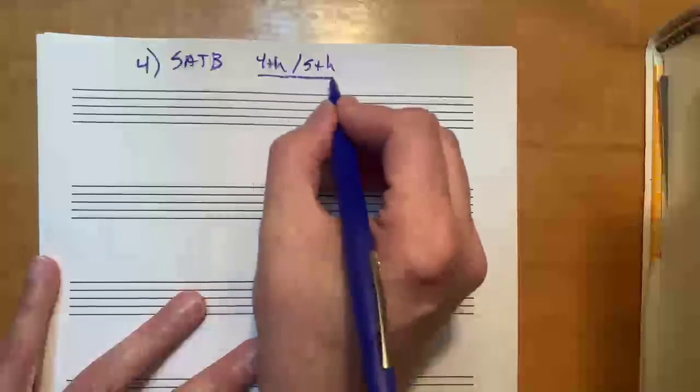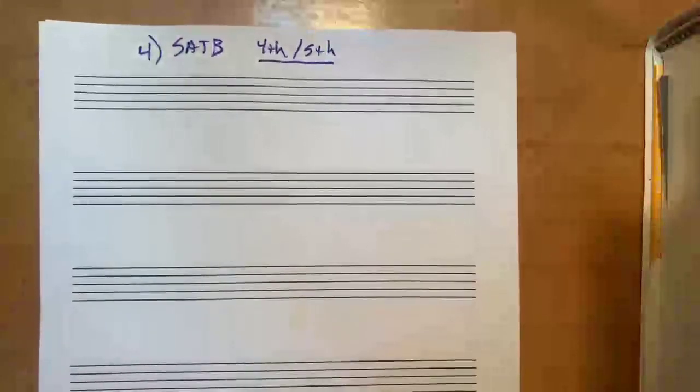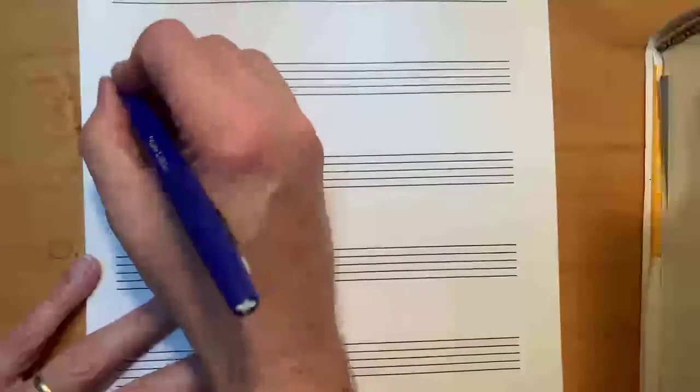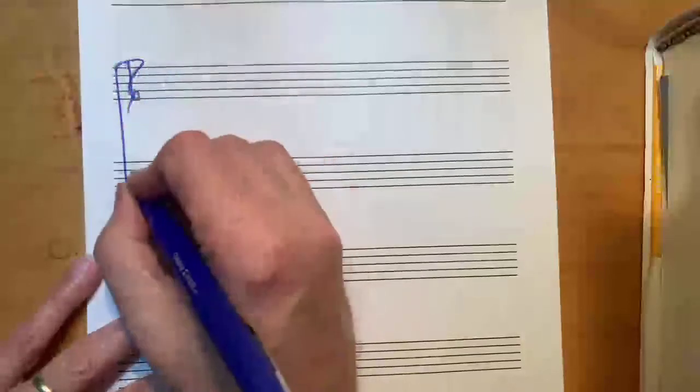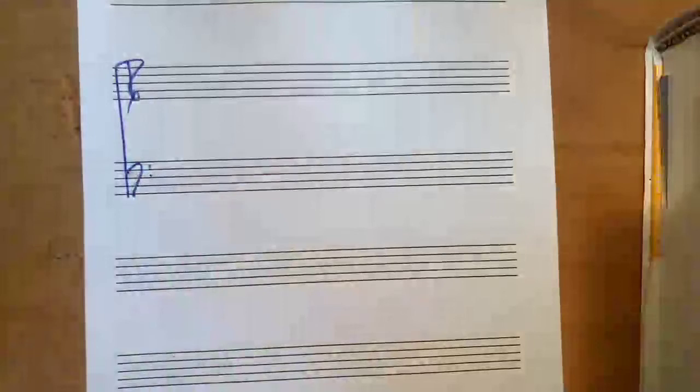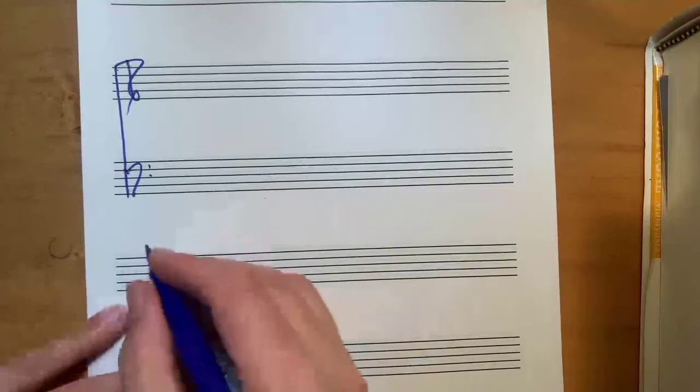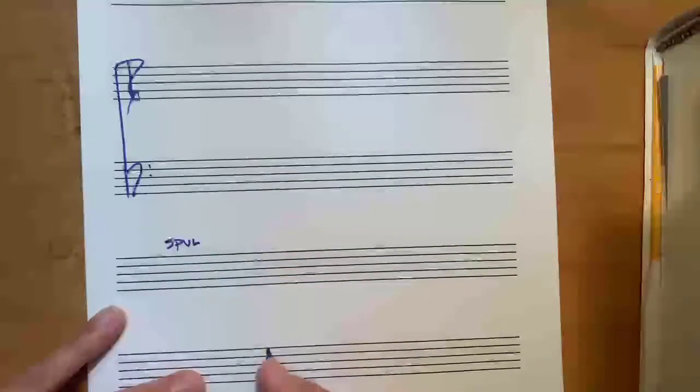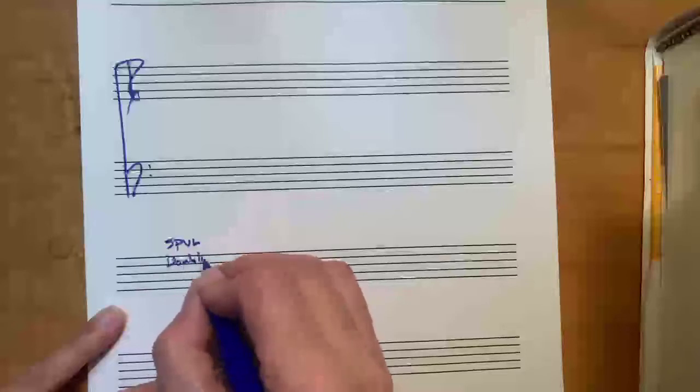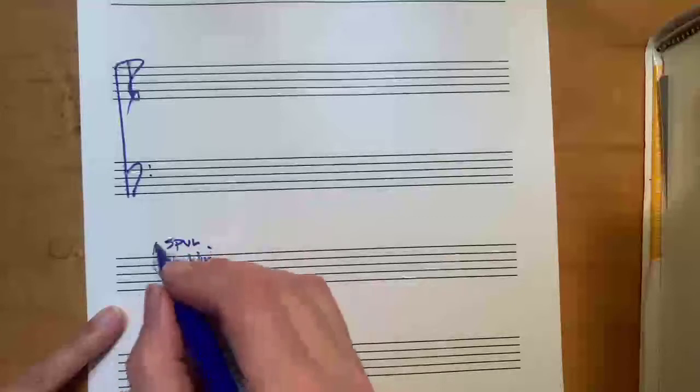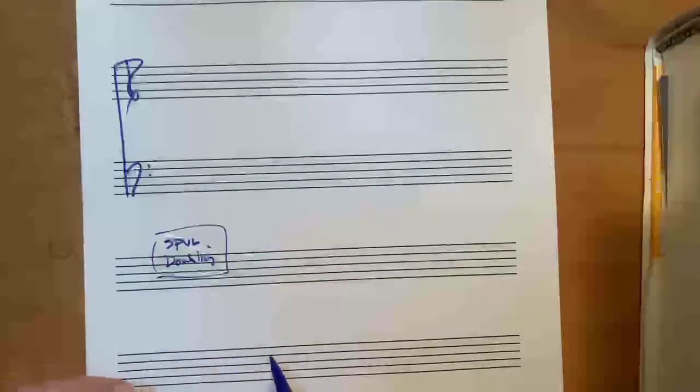This is actually the most common progression movement in tonal music. So you want to be able to do this one well. The textbook defines three ways to move by root by 4th or 5th, but I think we should forget about that. We should think of spivel, smoothest possible voice leading, and doubling. If we do that, we'll automatically come up with one of those three ways.